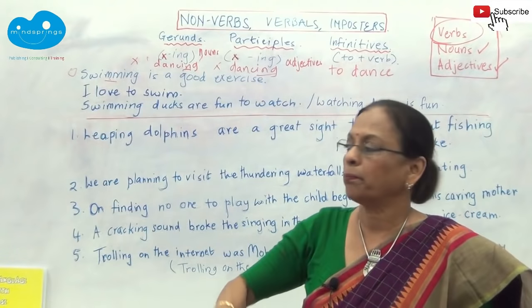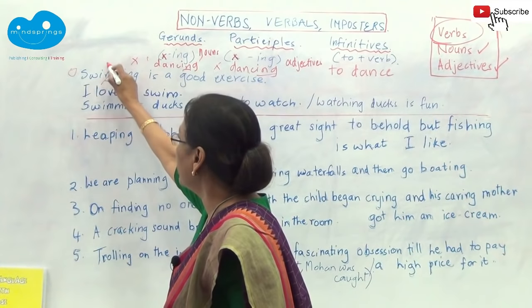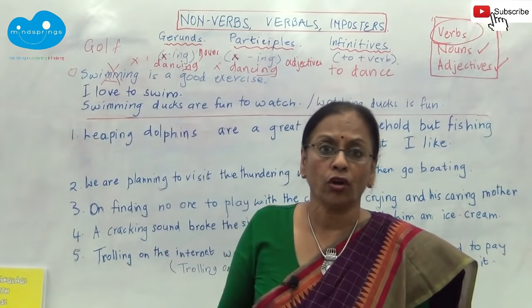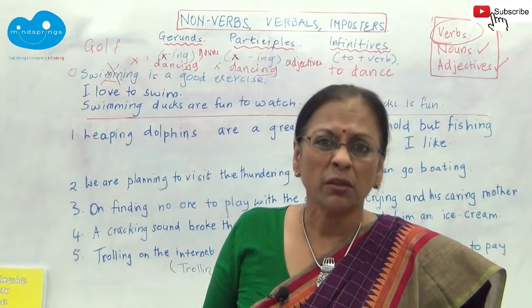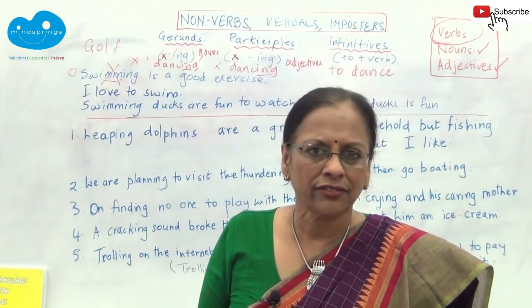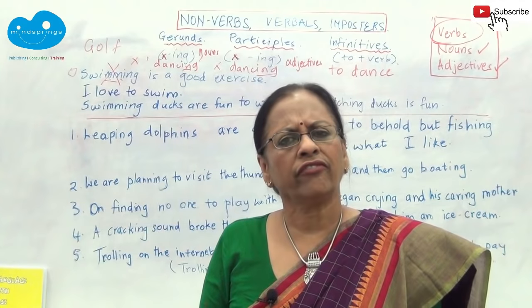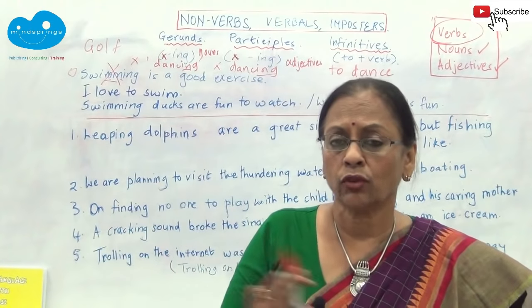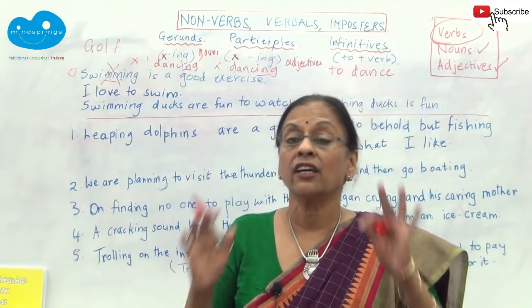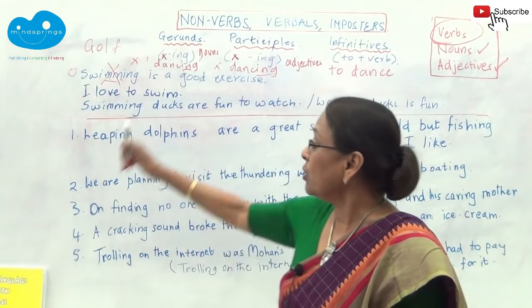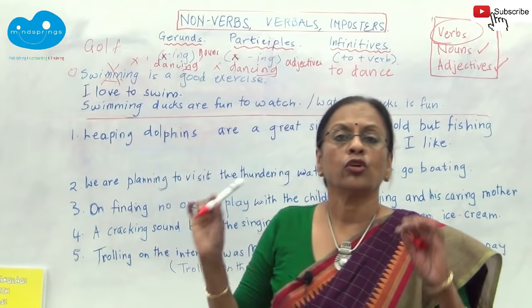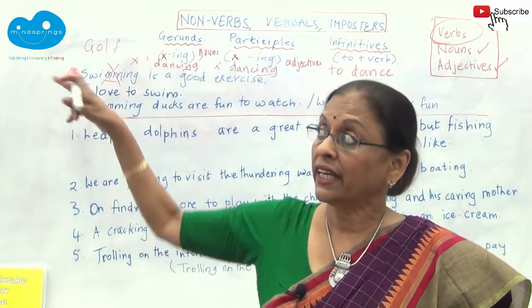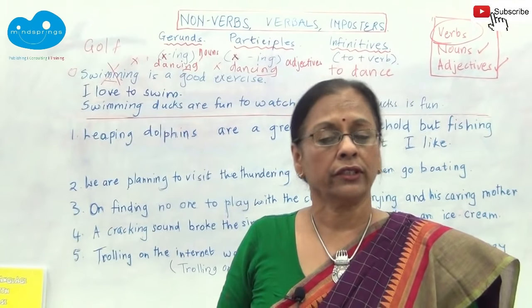Let's take one more example. If I cancel 'swimming' and say 'golf is a good exercise' — what is golf? You'll call it a noun. So you can only change a noun with another noun — golden rule. You cannot change it any which way you like. So I can change 'swimming' with 'golf,' and now I'm a hundred percent sure that 'swimming' is a noun. It's an -ing word with no helper in front of it. It's a gerund. It's that simple.